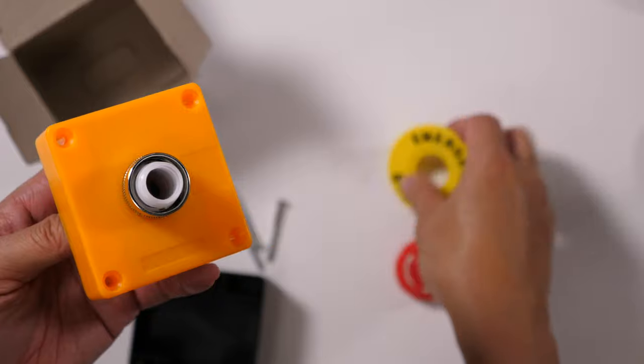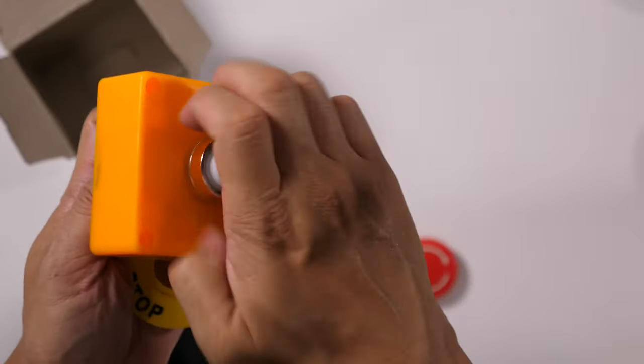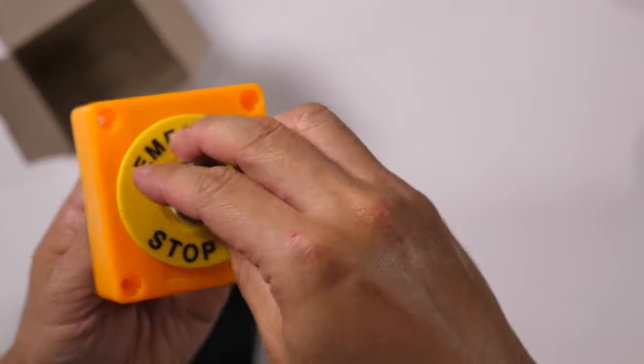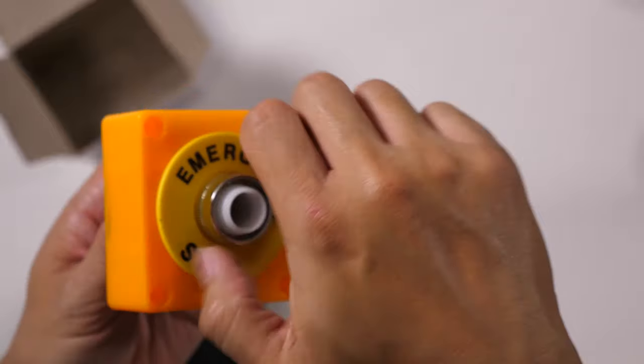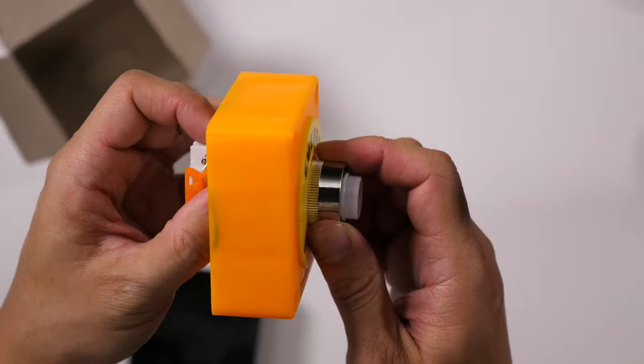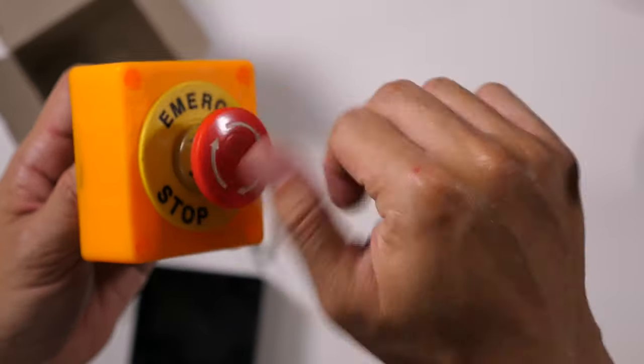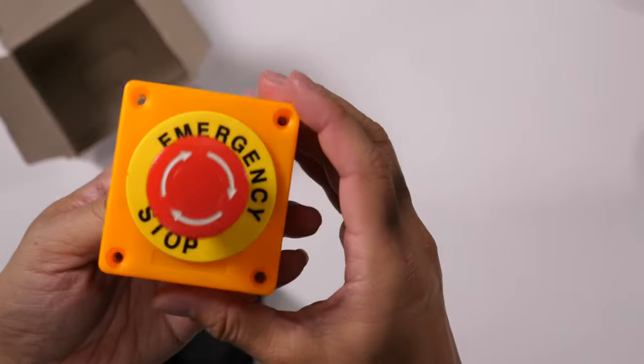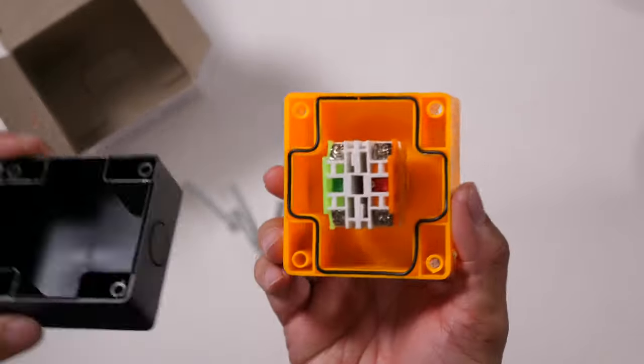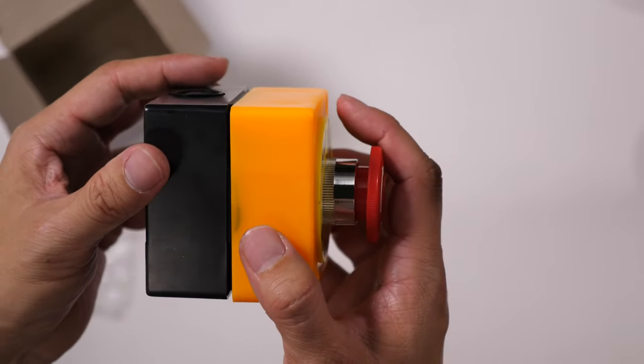We forgot the emergency stop, so let's put that in first. That just sits there. Then the silver ring, screw that down. Then screw the button on. Here's your emergency stop button, and then that just fits together here, like so.